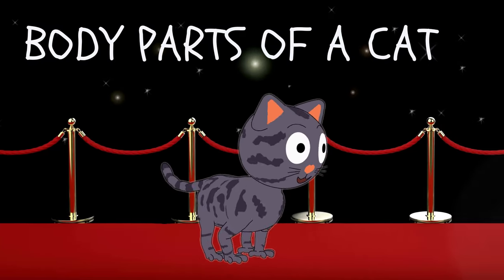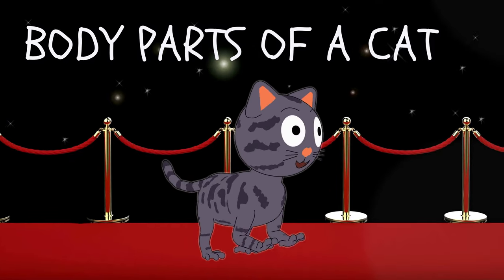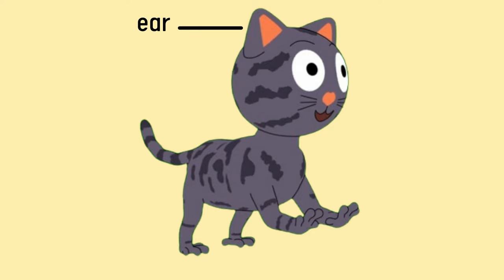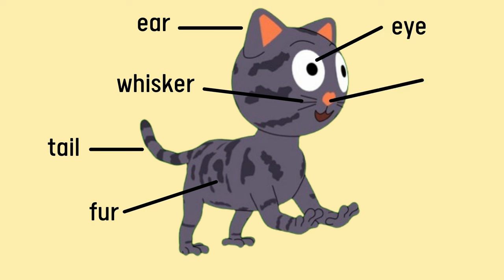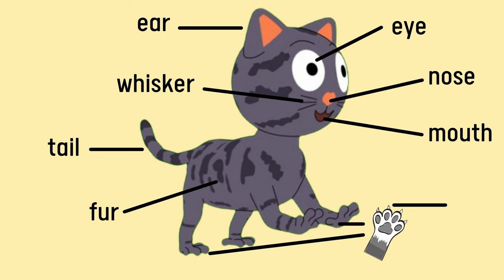Now we go to the body parts of a cat. Whisker. Tail. Fur. Eye. Nose. Mouth. Claw. Paw.